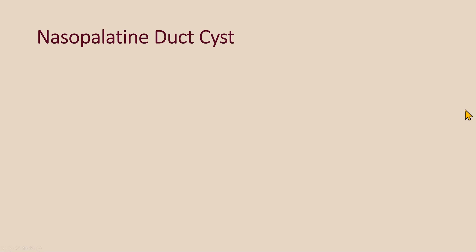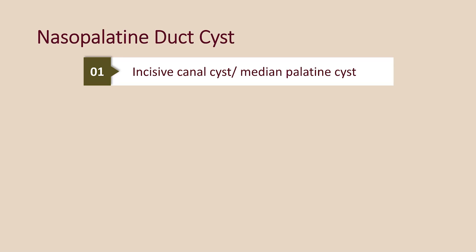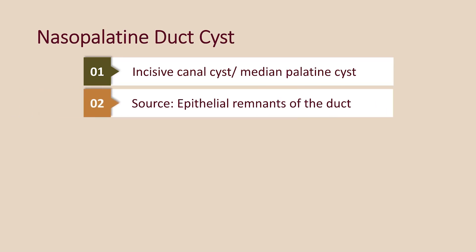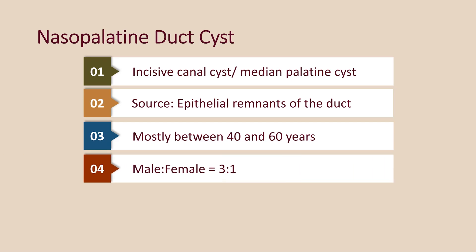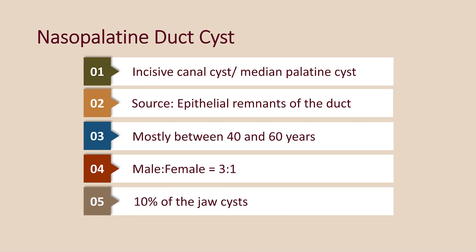The nasopalatine duct cyst is also known as incisive canal cyst or median palatin cyst. This cyst arises when epithelial remnants of the nasopalatine duct undergo cystic transformation. Most nasopalatine duct cysts are identified in patients between the age of 40 and 60 years. These cysts are most common in males — the incidence is three times higher in males. These cysts account for about 10% of all jaw cysts.